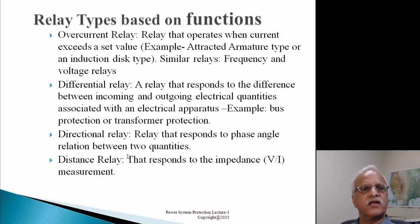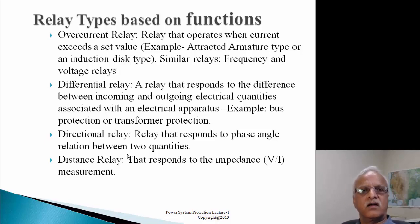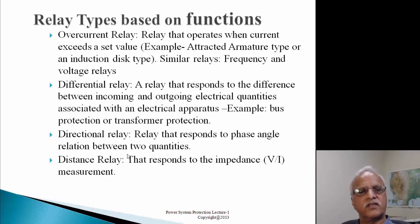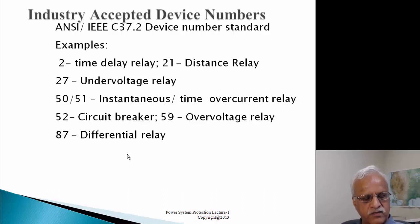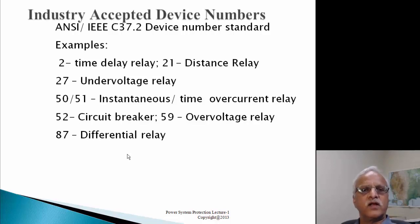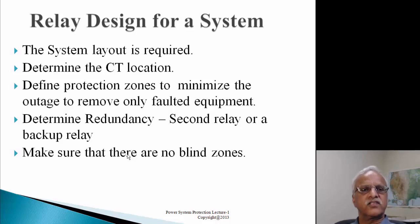Based on functions, we have overcurrent relays, differential relays that compare current into and out of equipment, directional relays, and distance relays. In the industry, relay functions have IEEE numbers defined in C37.2: 2 is the time delay relay, 21 is the distance relay, 27 is under-voltage relay, and 50/51 is instantaneous/time overcurrent. You can look at the C37.2 standard for a full list.